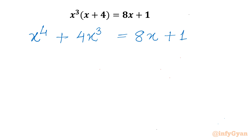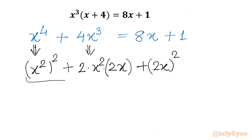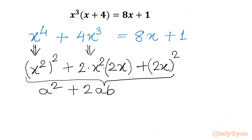Now I will write our LHS as x to the power 4. We want to frame one perfect square, so I can write x⁴ as x squared whole square. Targeting the identity a squared plus 2ab plus b squared. Now for the 4x cubed term, I can write this as 2 times a times b, where a is already fixed as x squared. So b is left — to get the product 4x cubed, b should be 2x.